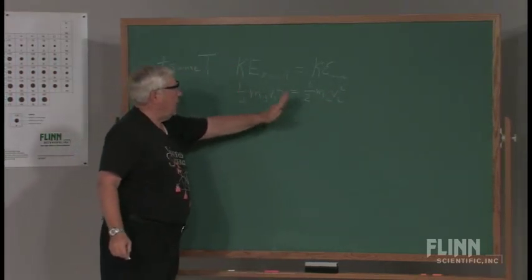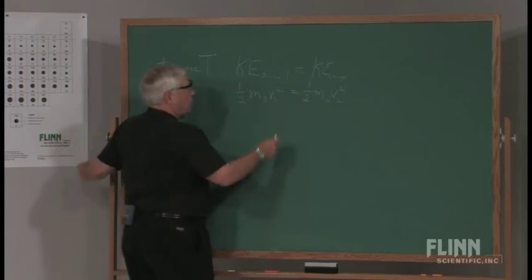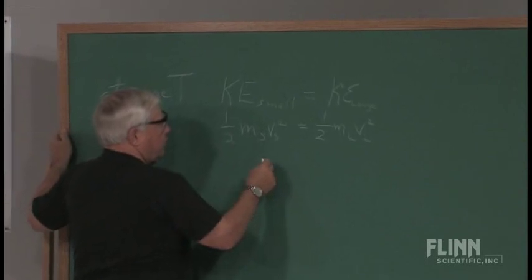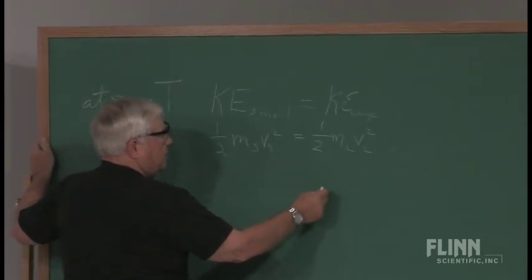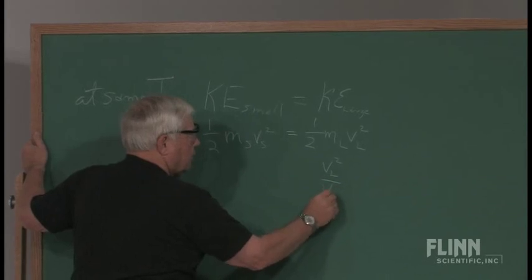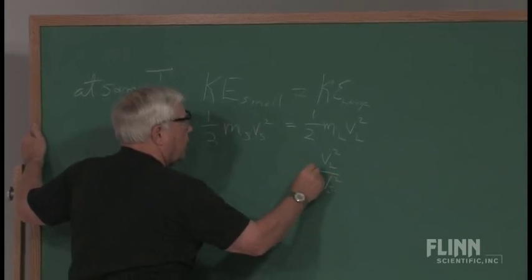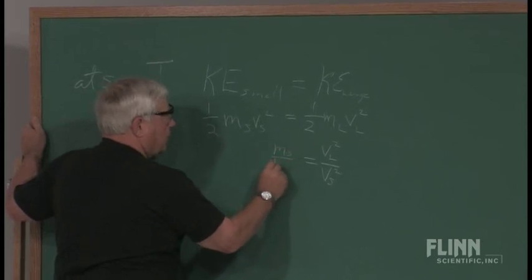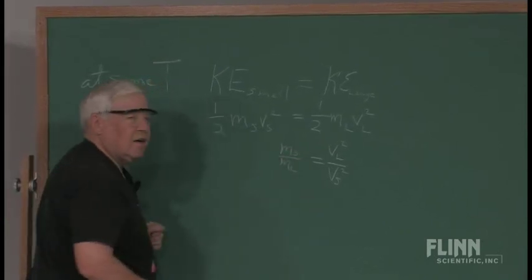If we take out the halves and we want to find the relationship between the large ones, if we solve this algebraically, the velocity of the large ones squared over the velocity of the small ones squared is equal to the mass of the small ones divided by the mass of the large ones.